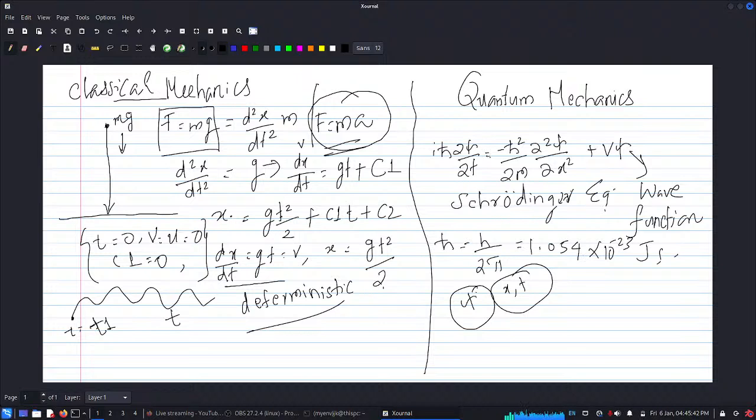and we solve - to study a system and look at the evolution of a system, we solve the Schrödinger equation for the wave function. That's how in quantum mechanics we study a given system. The Schrödinger equation serves the purpose of Newton's equation in quantum mechanics. That's for this short